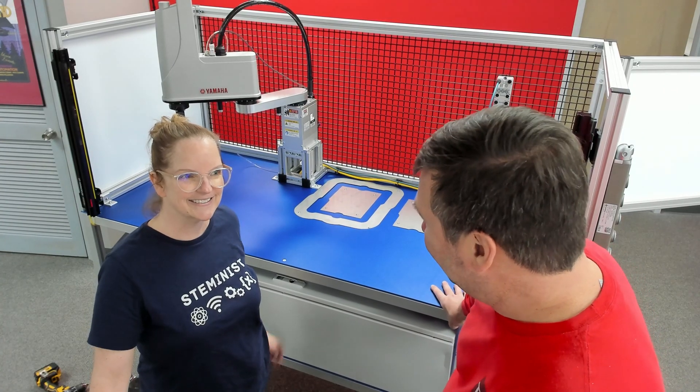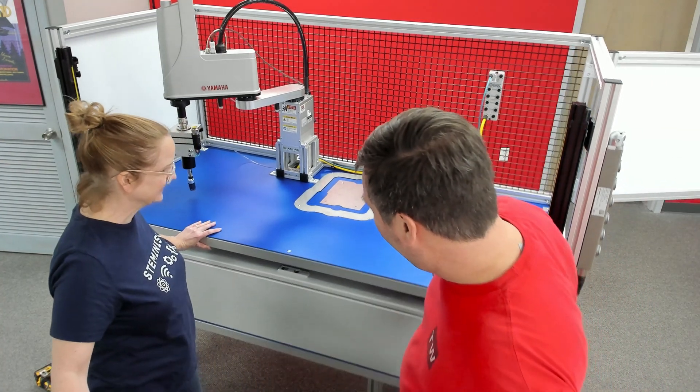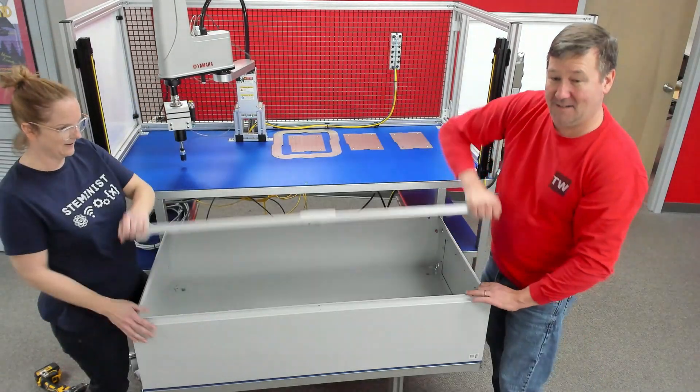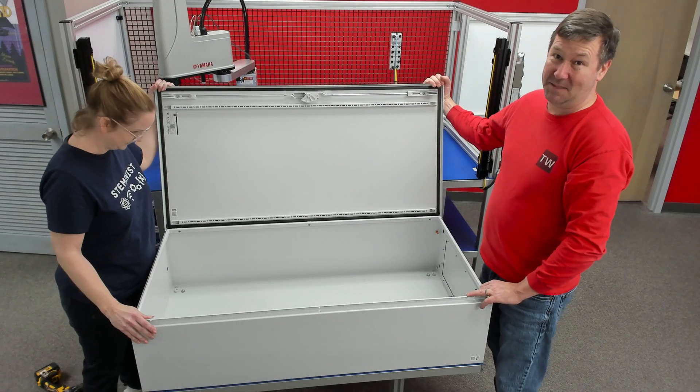Now I said we were done with the assembly of the mechanical portion of this, but there's a big part that we need to do still and that's right here on our slide out panel. Right now all we have is an empty box.